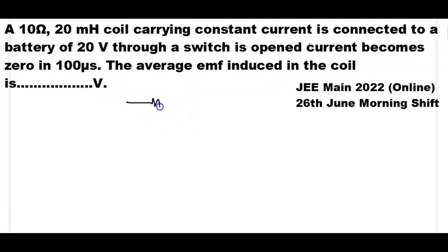So I am given a resistance of magnitude 10 ohm. So R is equal to 10 ohm. And inductor of inductance L is equal to 20 mH.